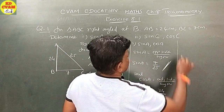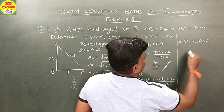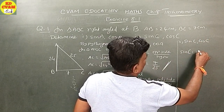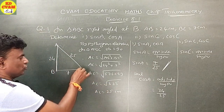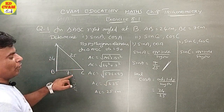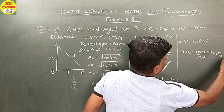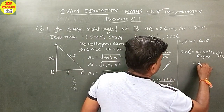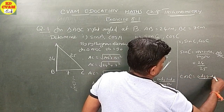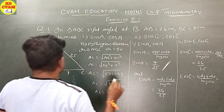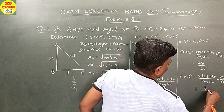Similarly, sin C is equal to opposite side upon hypotenuse. For angle C, the opposite side is AB. So sin C equals AB upon AC, that is 24 upon 25. Cos C is equal to adjacent side upon hypotenuse. Adjacent side is BC, so cos C equals BC upon AC, that is 7 upon 25.